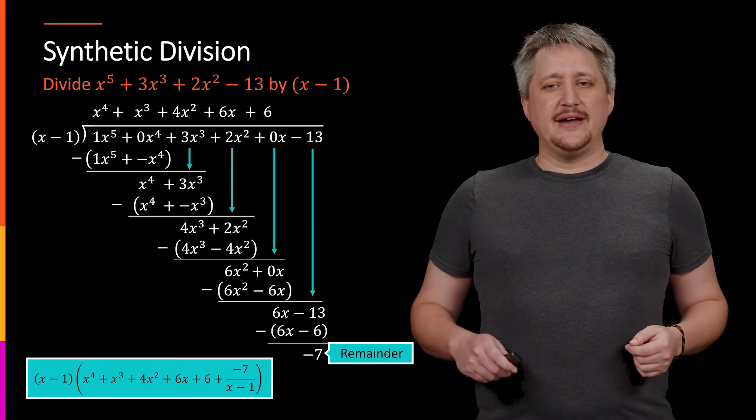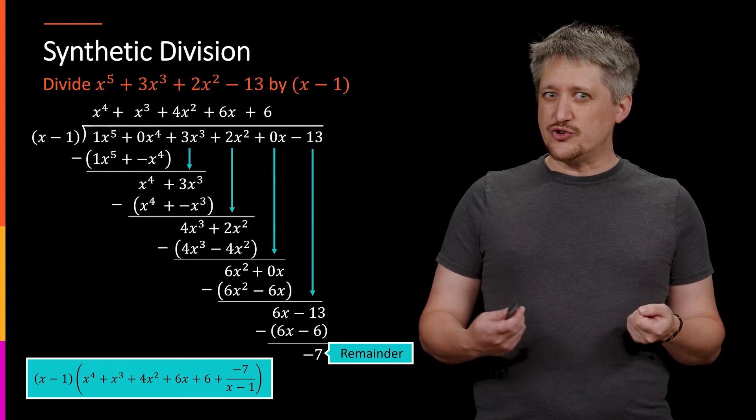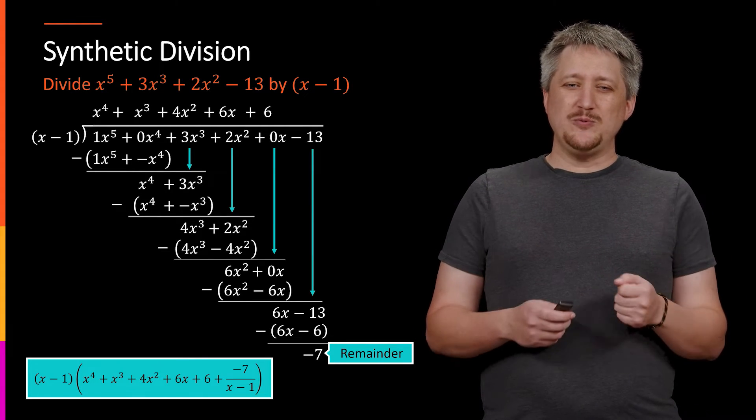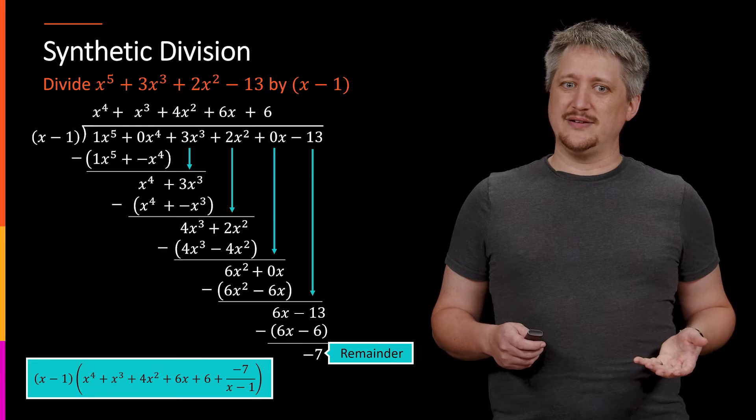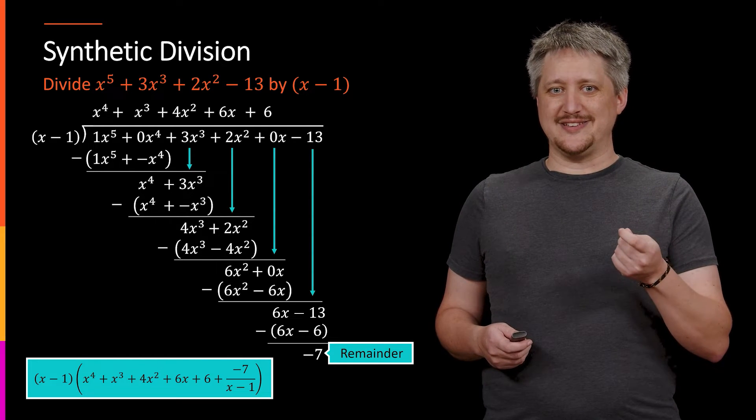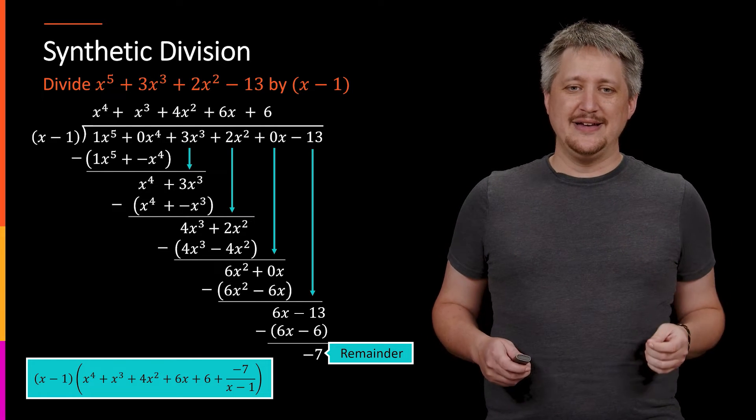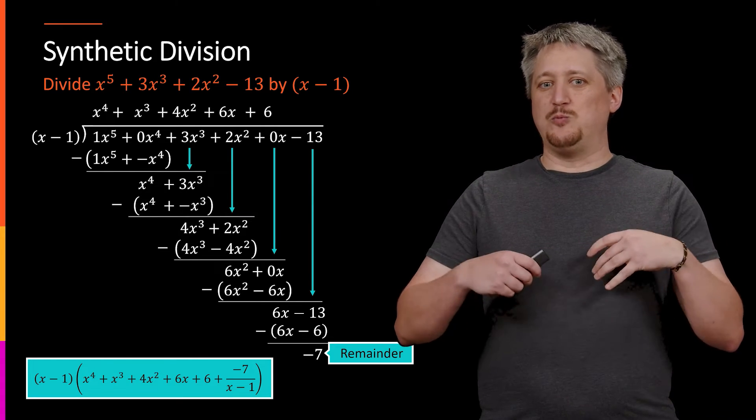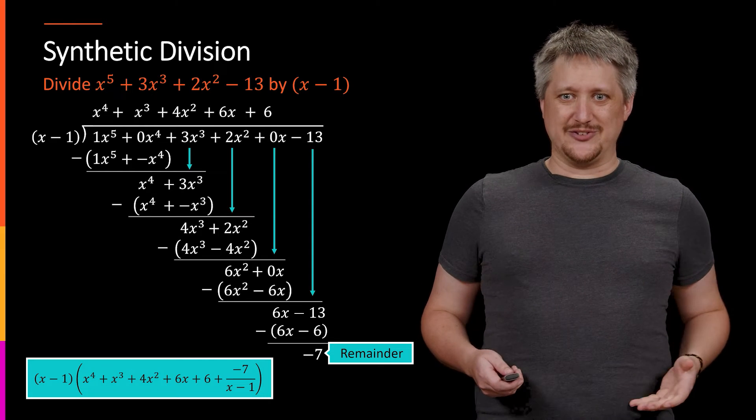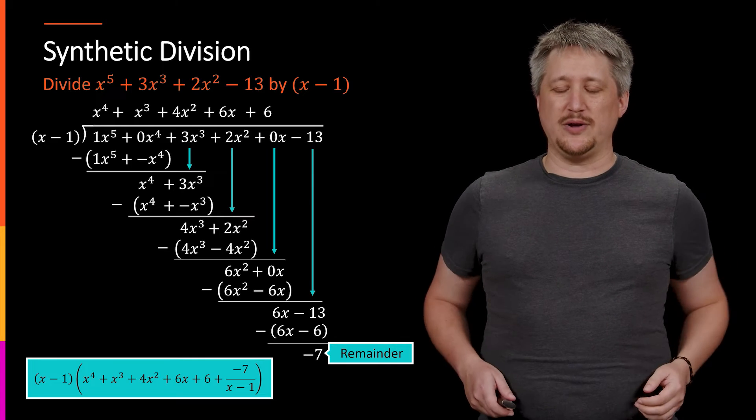So why go through all this? Well, it turns out that there's a shorthand version of this process where we do basically the same thing, but instead of doing it with the x's and the powers of x's tracked the whole way, we can do it instead without all those x's and their powers put in together and it turns out to take up a lot less space and be arguably a lot quicker.